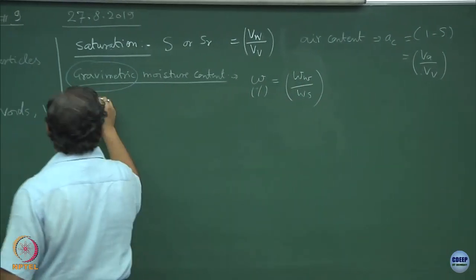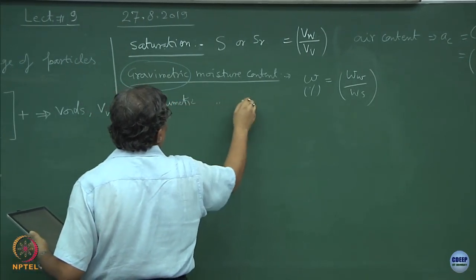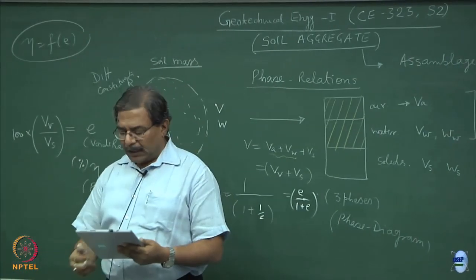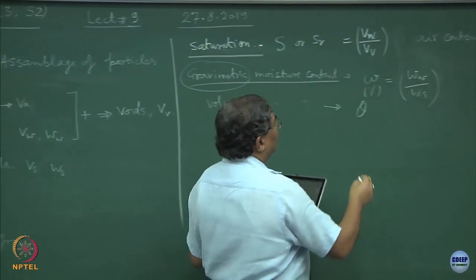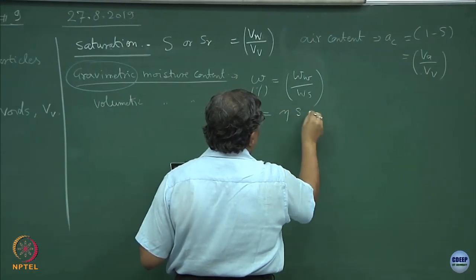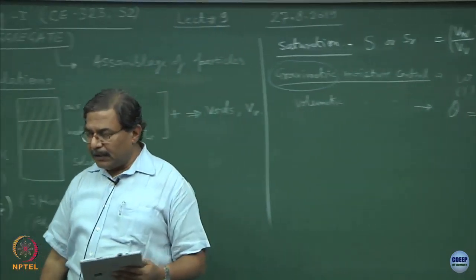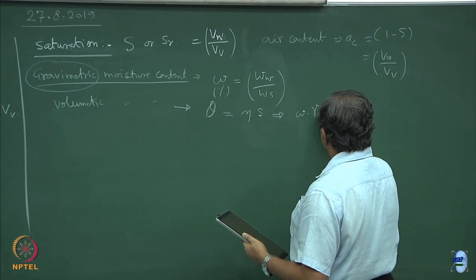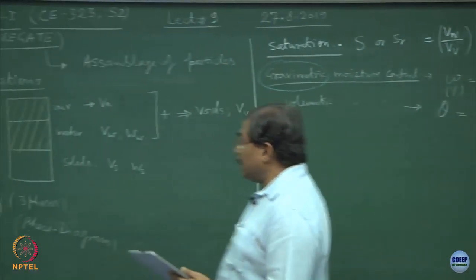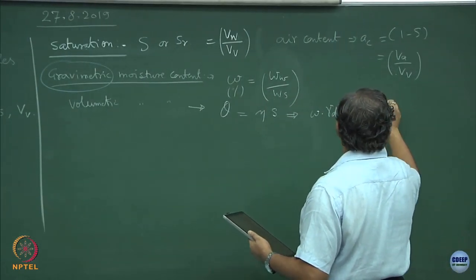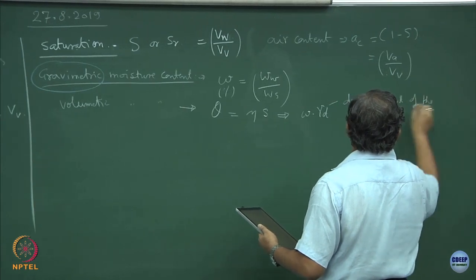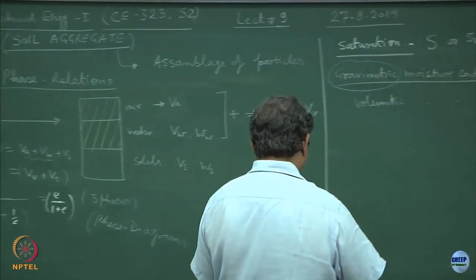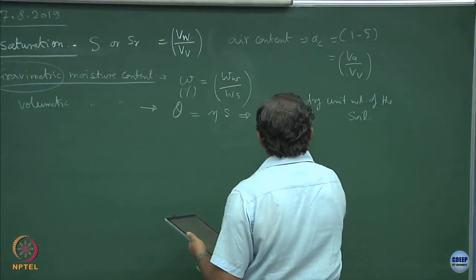To confirm: if I say volumetric moisture content, normally defined as theta, third-year students are not necessarily expected to know these things but let me expose you to these concepts. Theta equals porosity multiplied by saturation, or equivalently, gravimetric moisture content multiplied by gamma D, which is the dry unit weight.